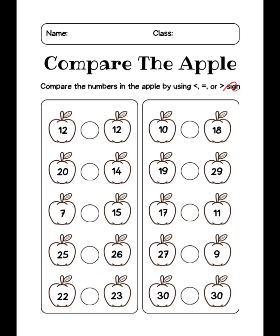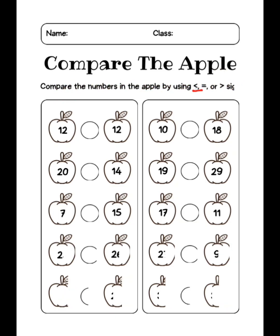We are going to compare the numbers shown in the apples using less than, equal to, or greater than signs. Here it is written 12 and here it is written 12 — so 12 and 12, they are both equal, right? So we use the equal symbol.